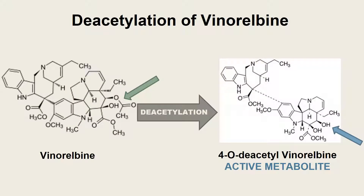On this slide you can see the original structure of vinorelbine. The green arrow is pointing to the acetyl group that will be taken off once vinorelbine goes through deacetylation, and it is then left with the hydroxide group shown by the blue arrow. The active metabolite is 4-O-deacetyl-vinorelbine.